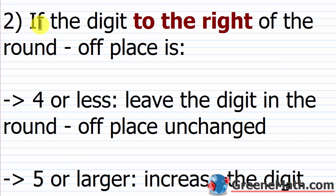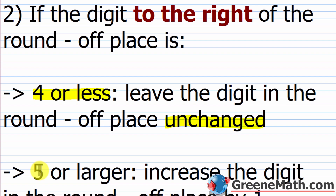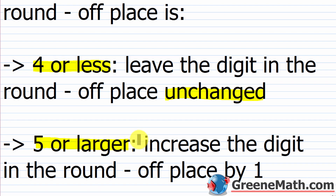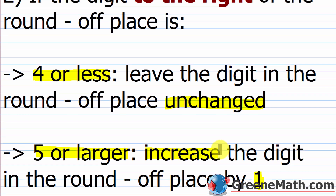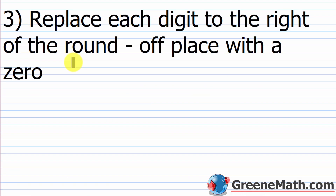Step two is to look at the digit to the right of the round-off place. You have two scenarios: if that digit is four or less, leave the digit in the round-off place unchanged. If it's five or larger, increase the digit in the round-off place by one. Then the third and final step is to replace each digit to the right of the round-off place with a zero.